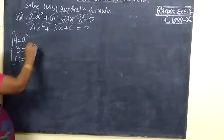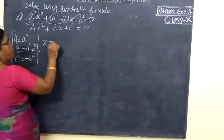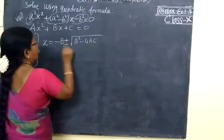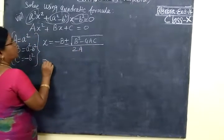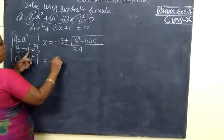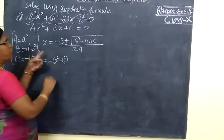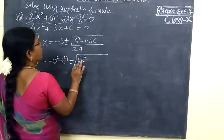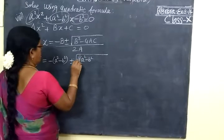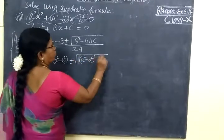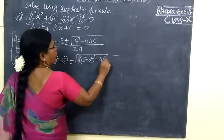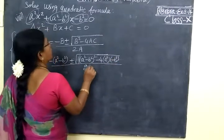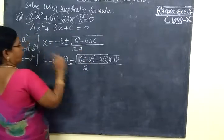So we have written A, B, C. Now the solution is x = (-B ± √(B² - 4AC)) / 2A. So this is equal to minus — instead of B we are writing A² - B². This minus is in the numerator, so plus or minus root of (A² - B²) squared, minus 4 into A value A², then B value -B², all divided by 2A².